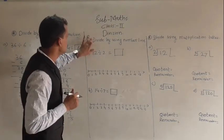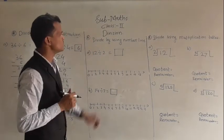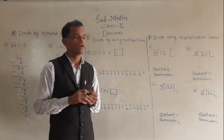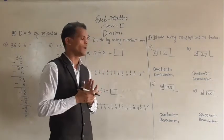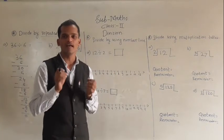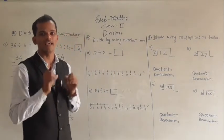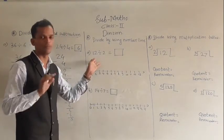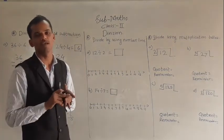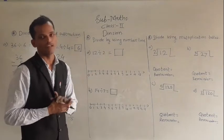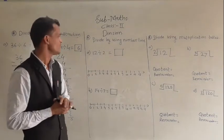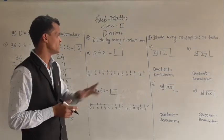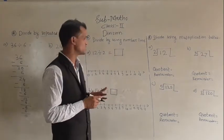Next example: divide by using a number line. You can do any operation on the number line. A number line is a line having numbers. You can do any operation — addition, subtraction, multiplication, or division — on this number line. Here: 12 divided by 2, and we have to find out the quotient.